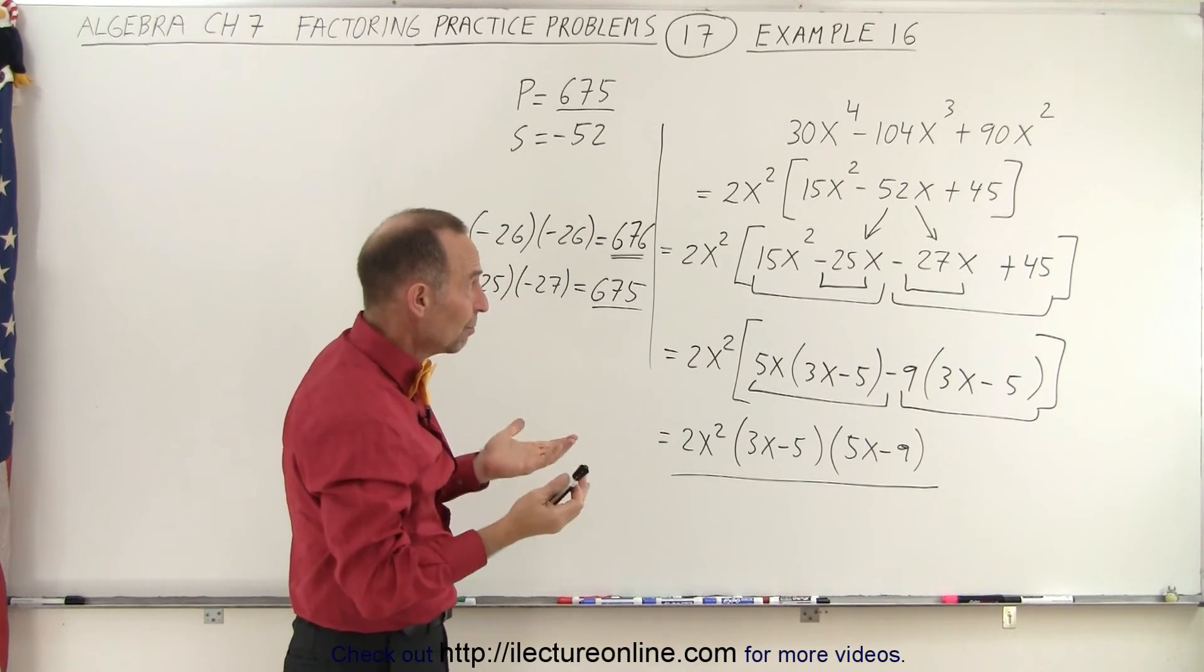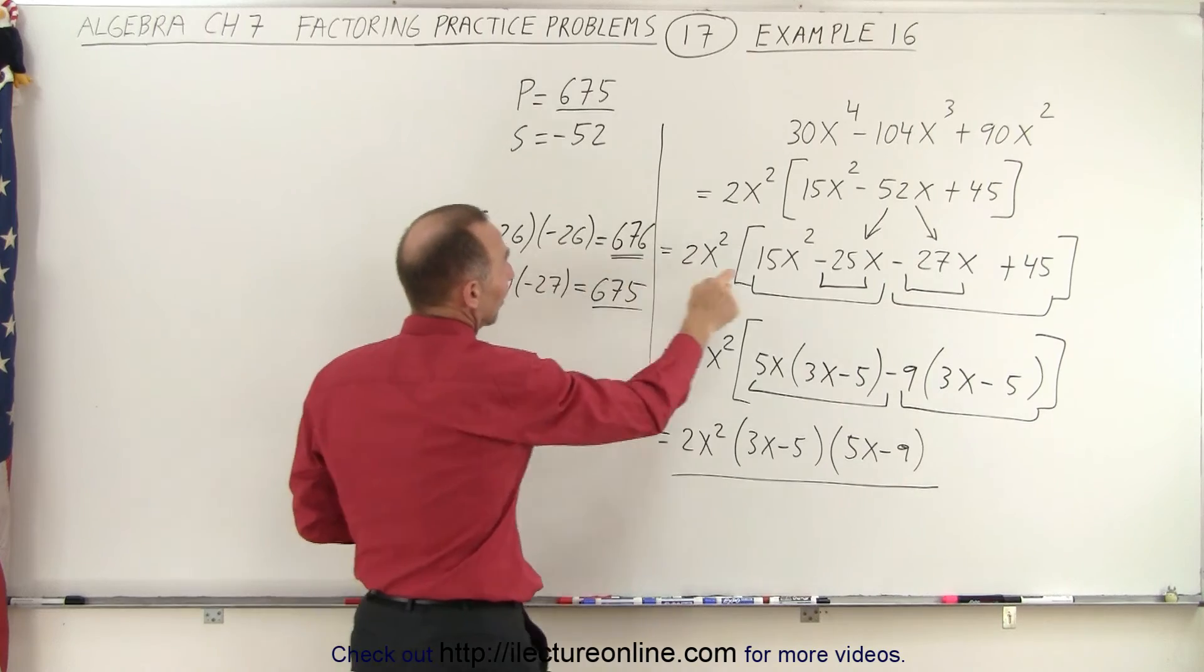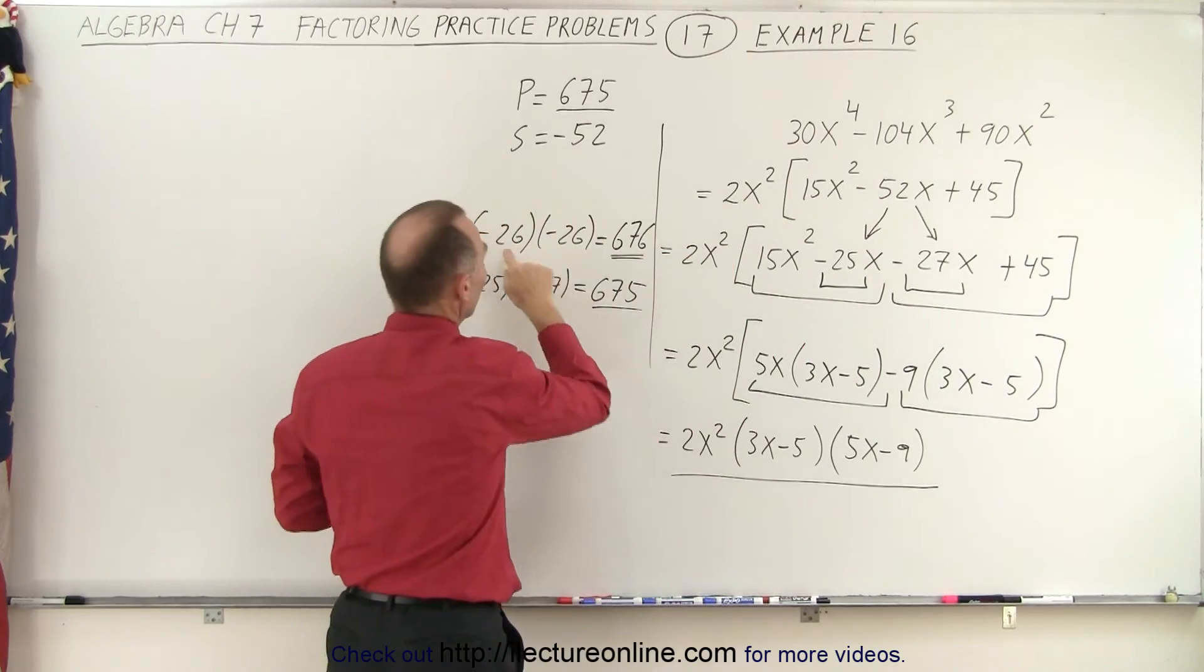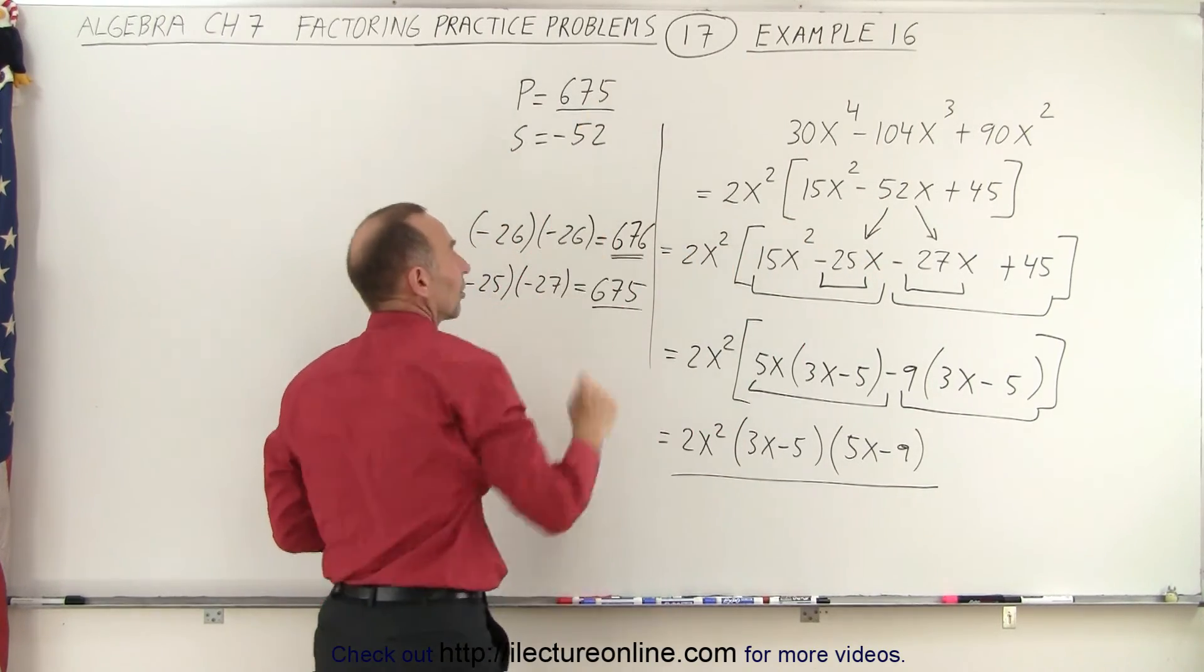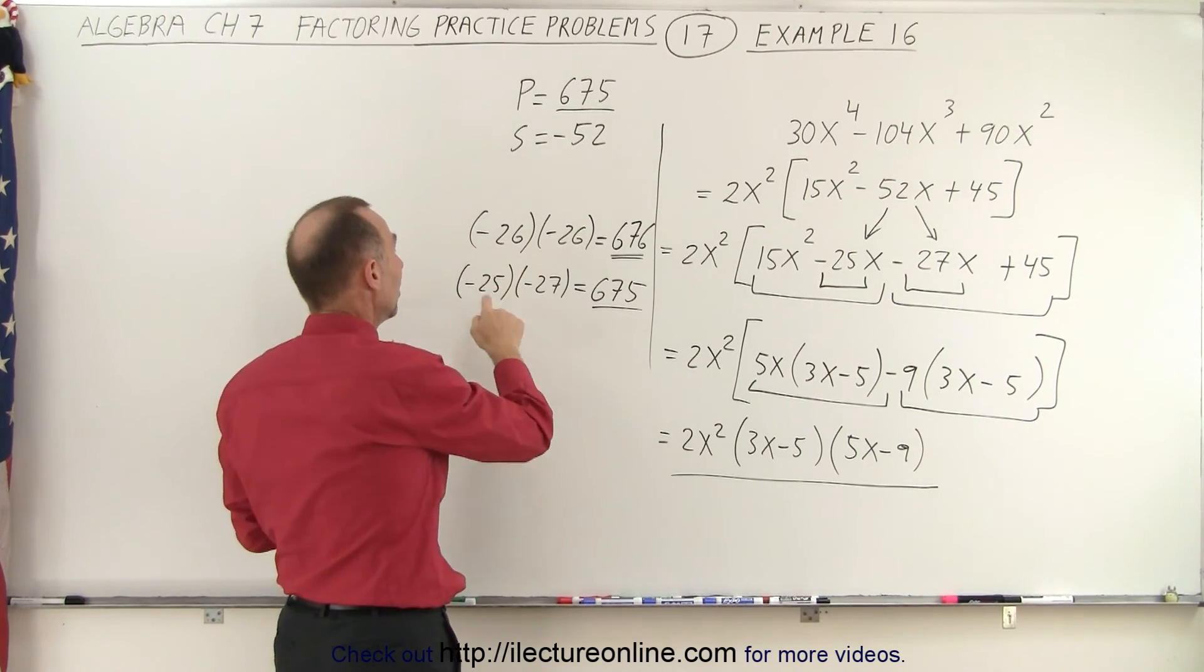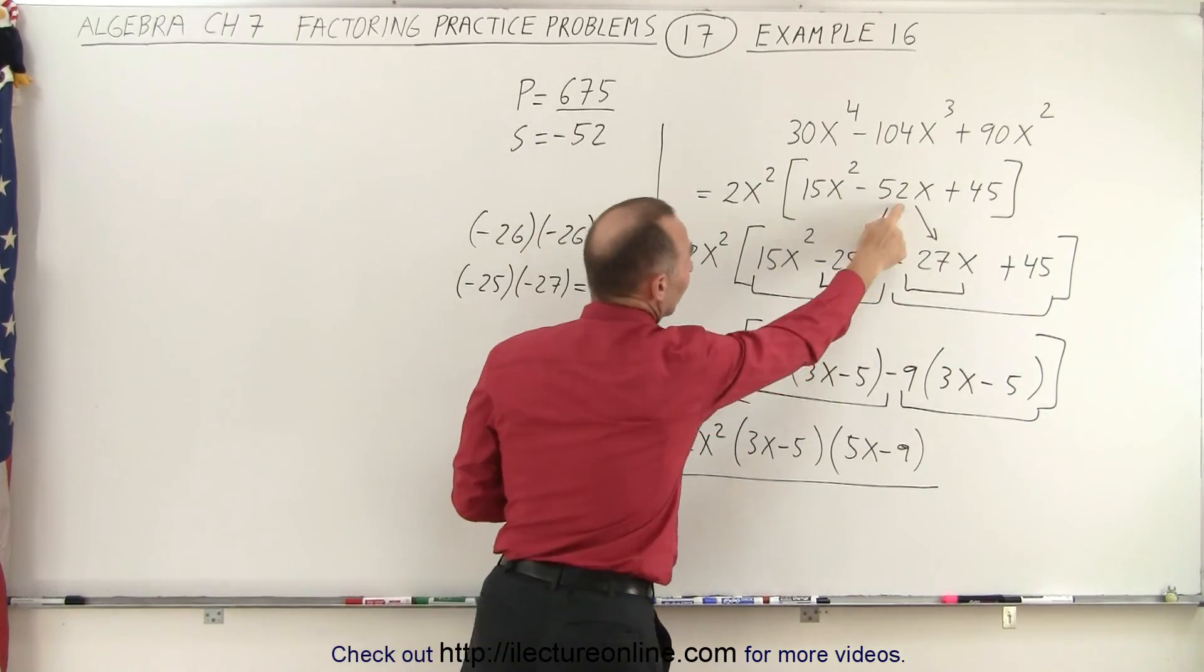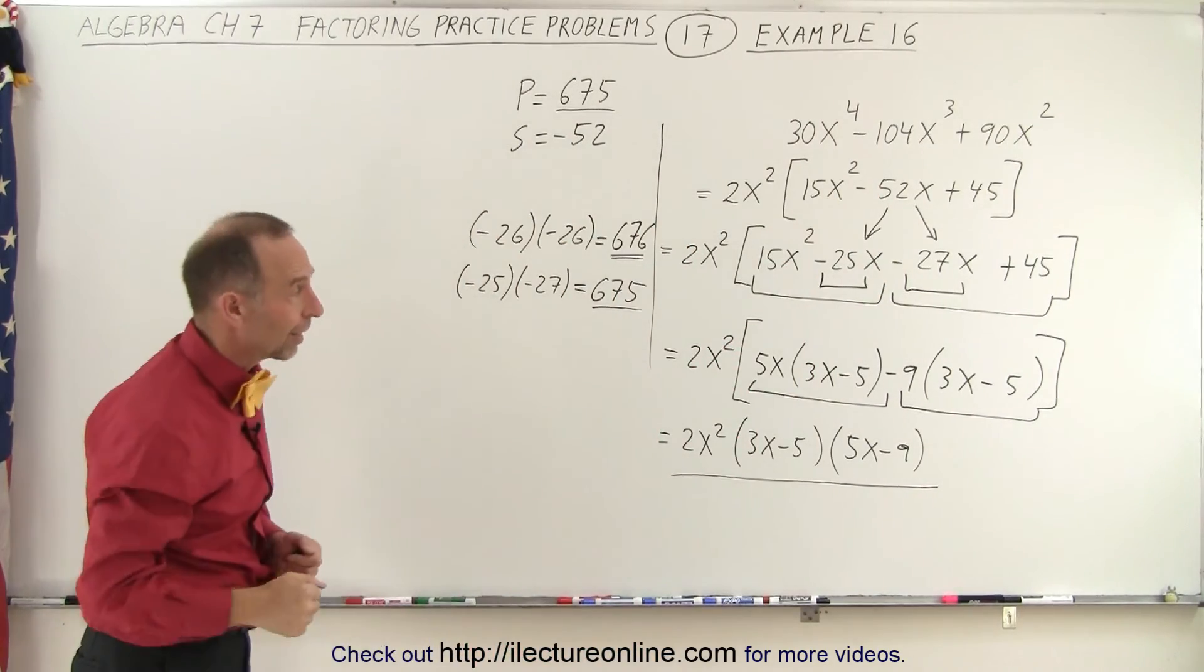So I started out using 26 and 26. When I add them together, I get minus 52 because they're both negative. And when I multiply, I get almost what I was looking for, but not quite. So I tried 25 and 27. When I multiply those together, I get 675. When I add them together, I get minus 52. And so that was the right combination.